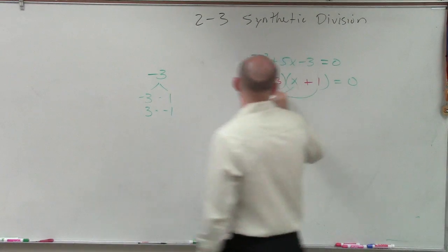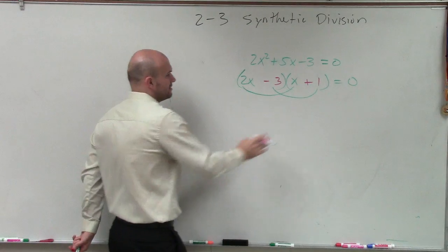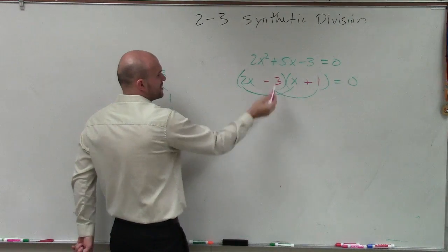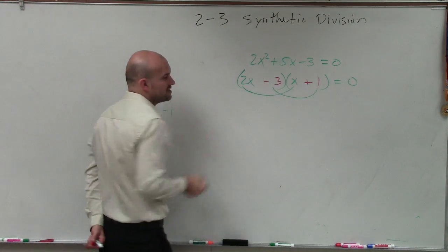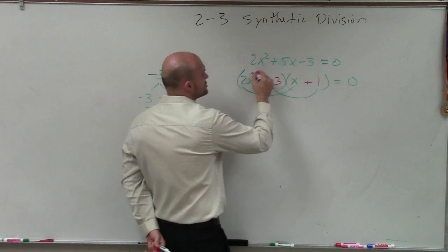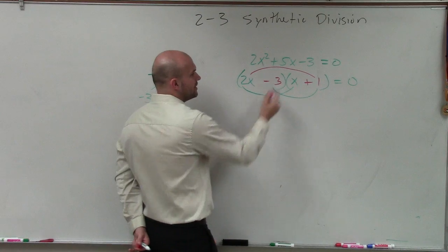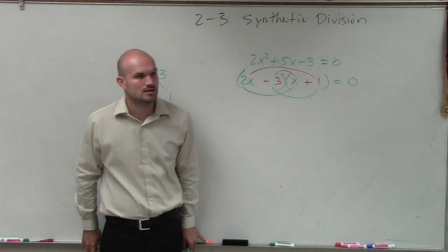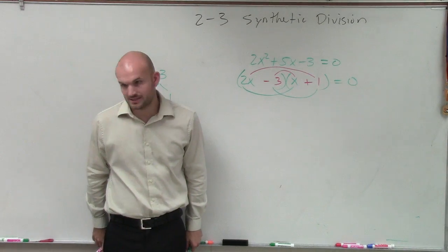Because what I'm going to do now is I know that 2x times x gives me 2x squared, and I know that negative 3 times 1 gives me negative 3. However, does 2x times 1 and negative 3x times x give me a positive 5x? No, it does not.